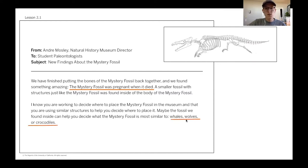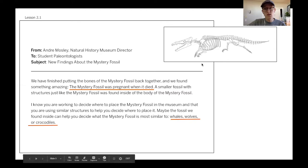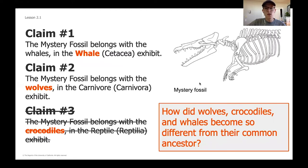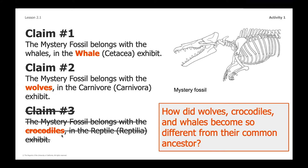So when looking at whales, wolves, and crocodiles to figure out which is most closely related to the fossil, we were able to narrow down our claims. We had originally thought the mystery fossil might be related to a whale or a wolf, but then we figured out that because the mystery fossil was pregnant — meaning it gave birth to a live animal — it was probably less likely related to the crocodile, because crocodiles hatch from eggs rather than giving live birth.